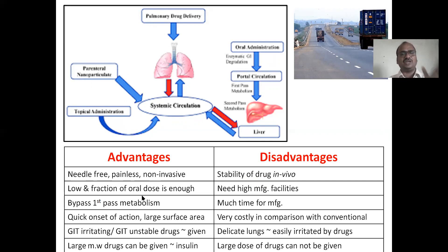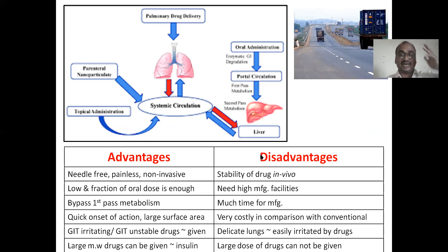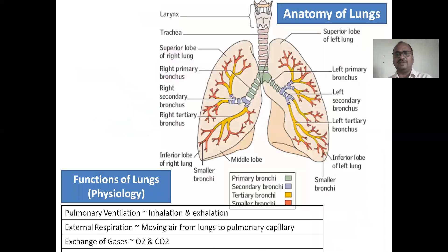A low fraction of oral dose is enough. This is a very powerful route with quick onset of action and high drug absorption. GI-unstable drugs like insulin can be given through this route, as well as large molecular weight drugs. Disadvantages: stability problems, need for high manufacturing facilities — nebulizers, metered-dose inhalers, and dry powder inhalers are very difficult and costly to manufacture compared to tablets. Large doses cannot be given through this route.